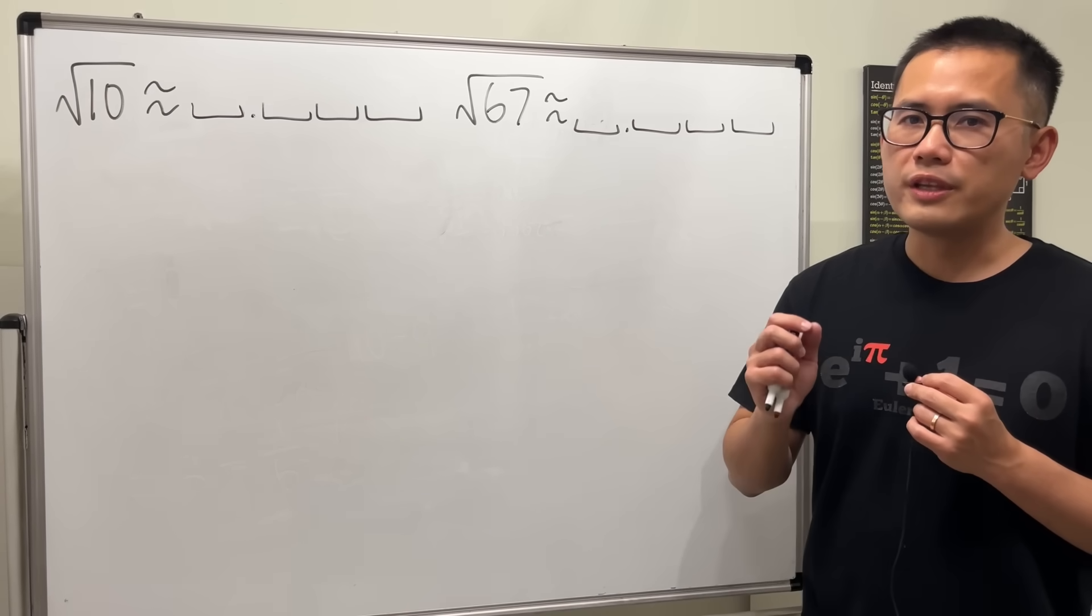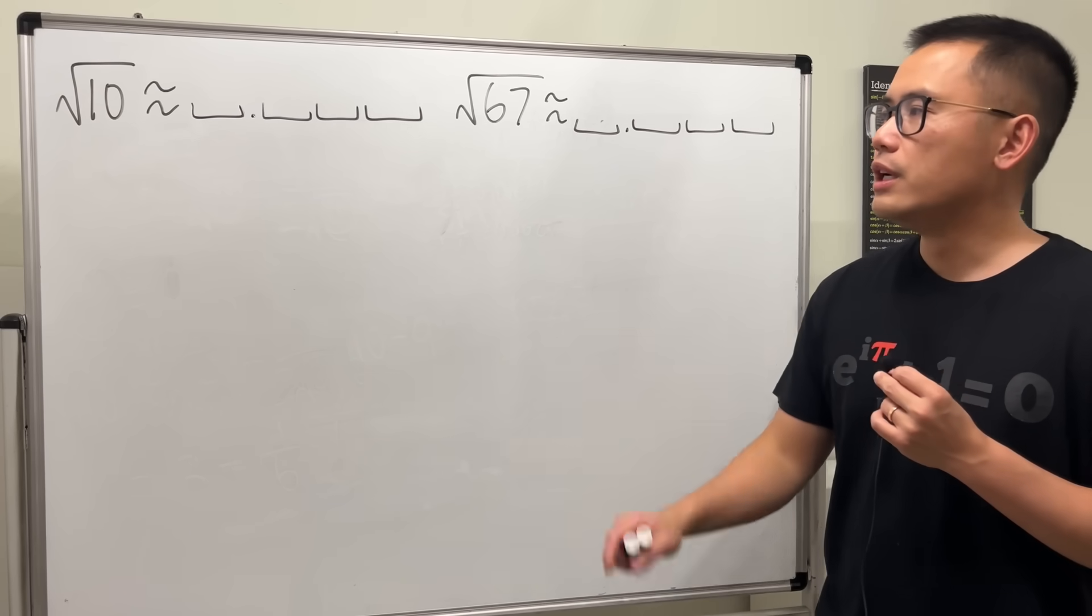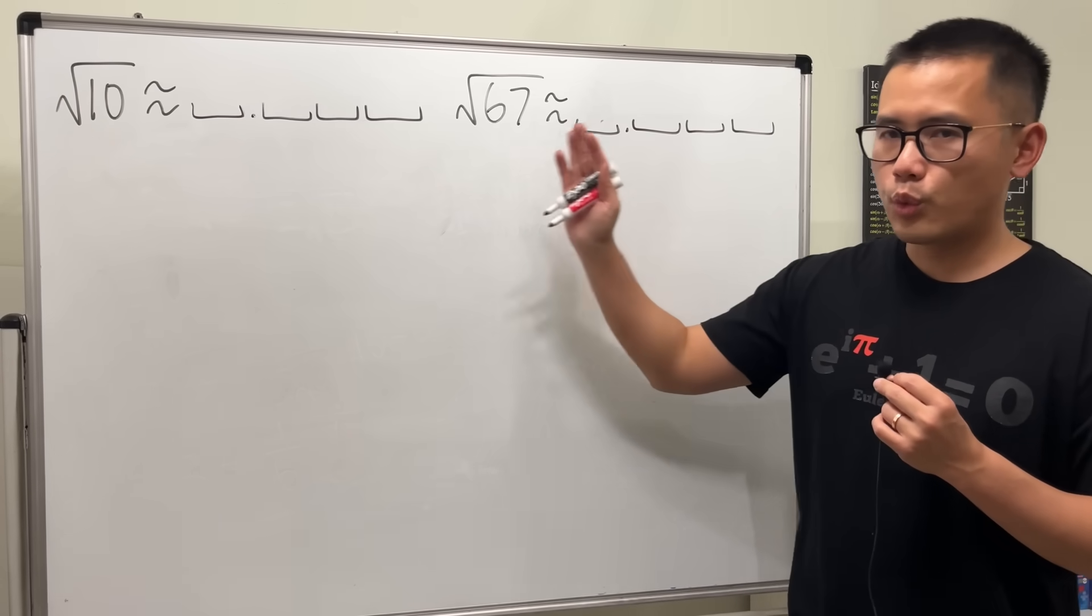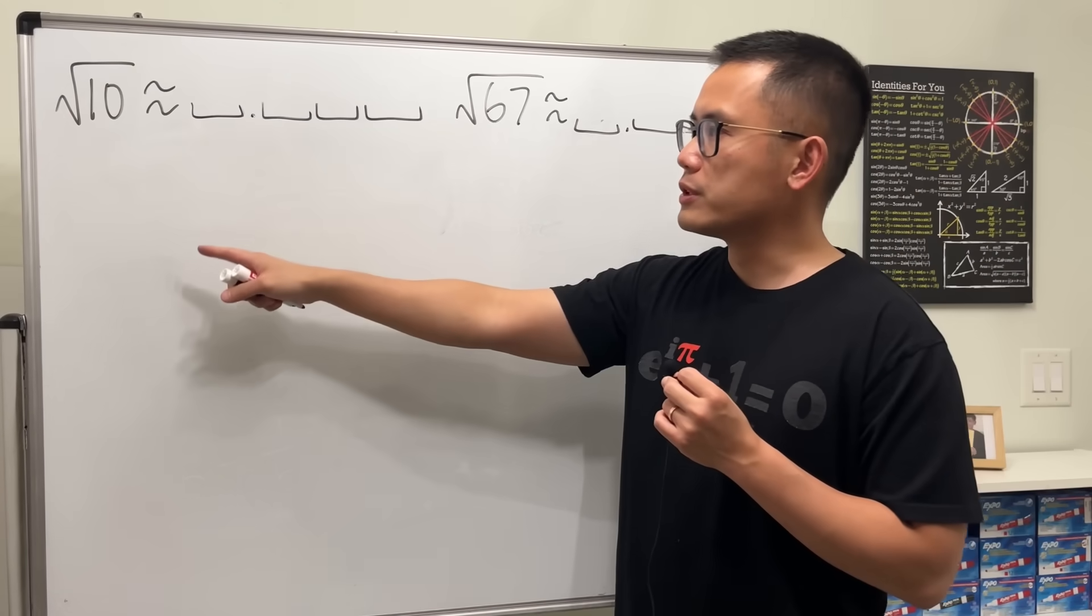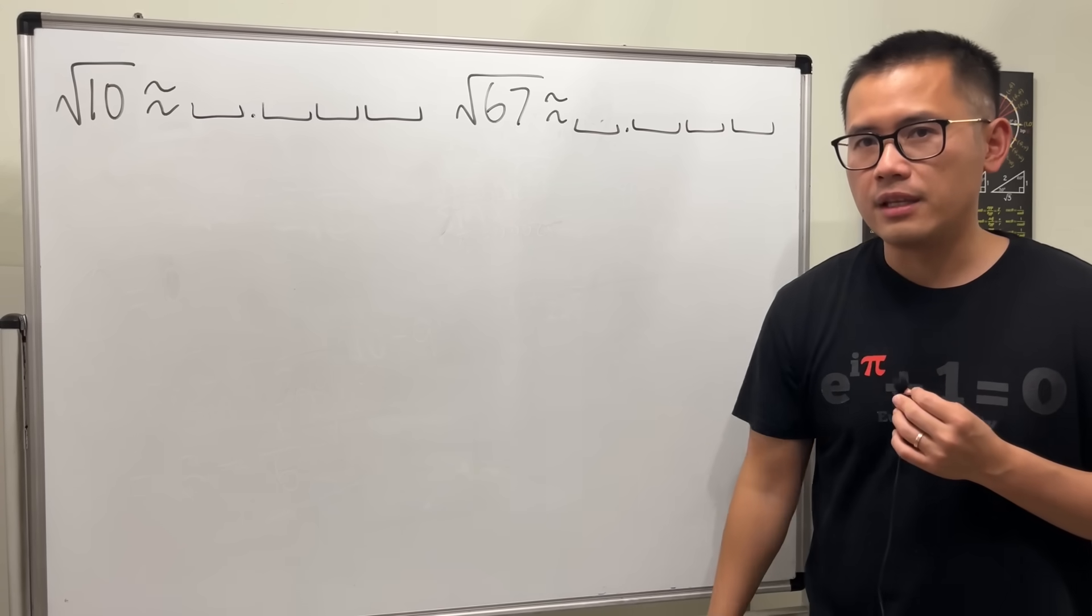So I'm going to show you guys how you can use the things that you learned from your Calculus 1 class to get approximations for square root numbers when the inputs are not perfect squares. We will do these two examples first, and then I will explain the idea after that.